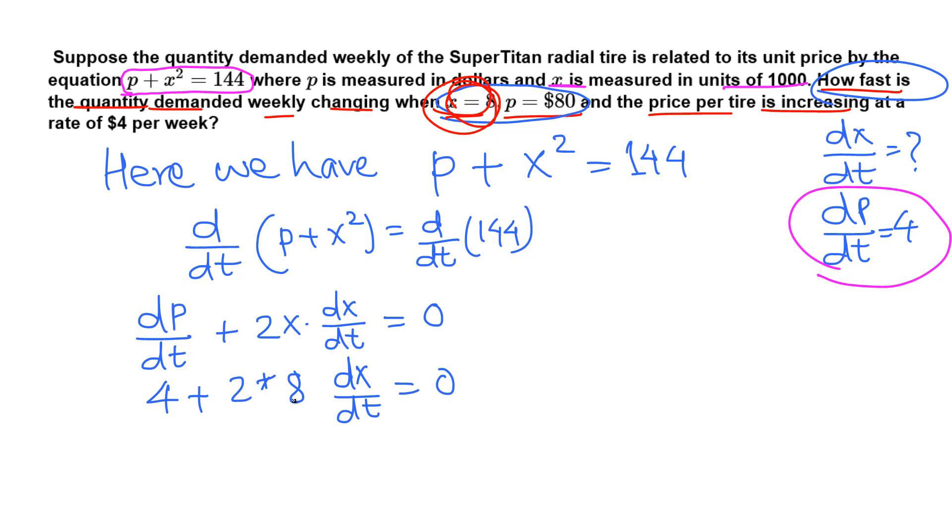That equals 0. We cannot add, but 2 times 8 is 16. 4, move this over, subtract 4 from both sides. 2 times 8 is 16, dx over dt equals this 4, subtract 4, so negative 4. Now divide by 16. dx over dt equals negative 4 over 16.